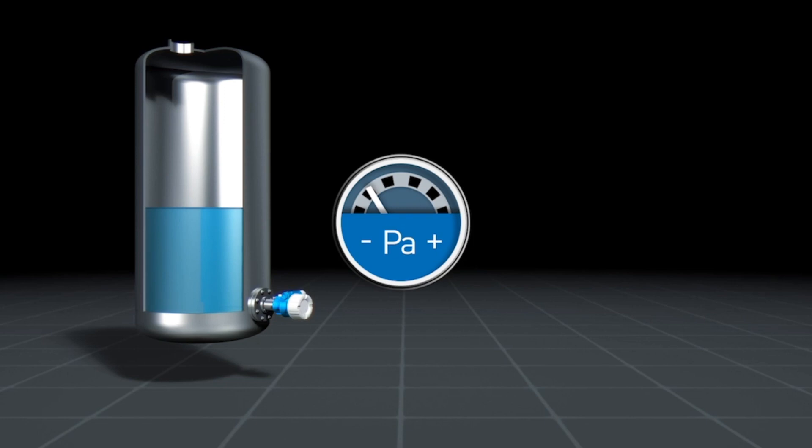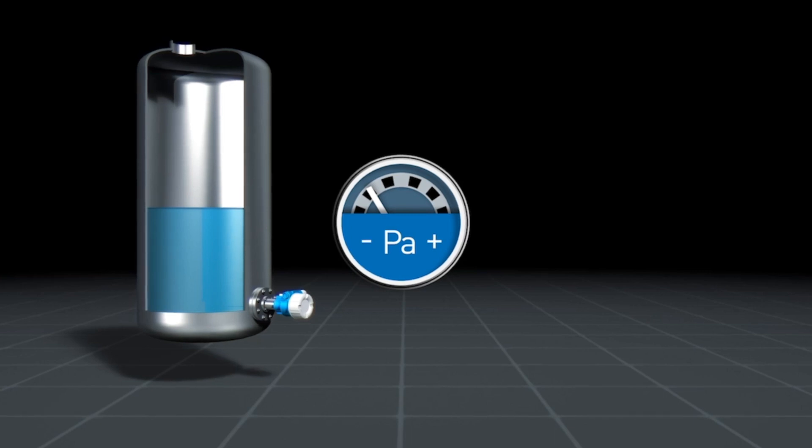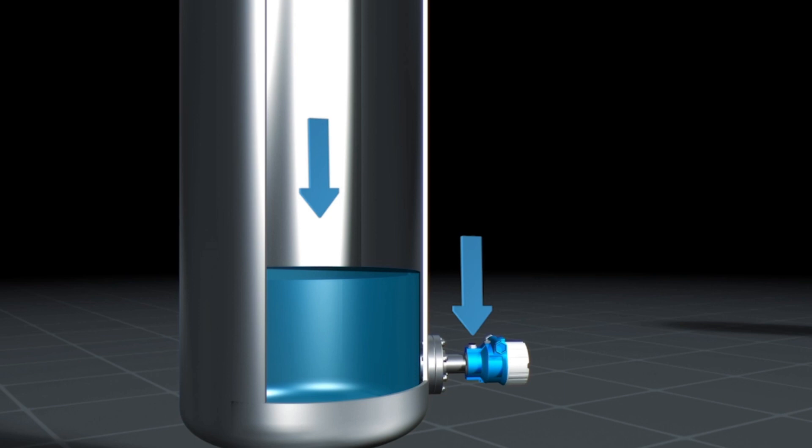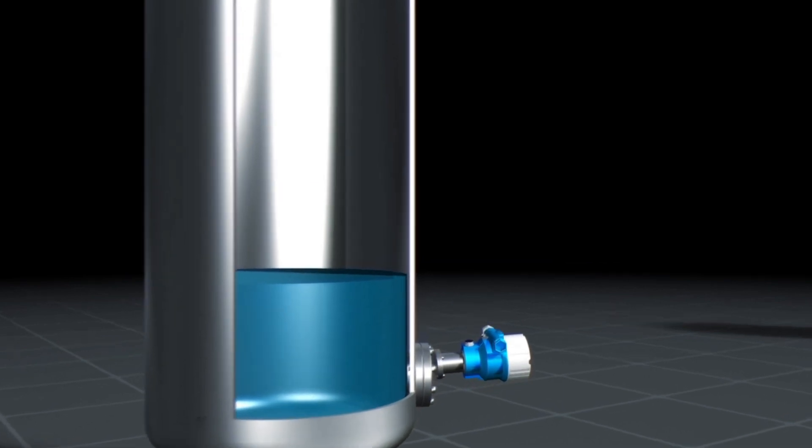In an open tank, pressure is continually compensated in relation to ambient air. Therefore, the gas in the upper area of the tank does not affect level measurement. However, in addition to the pressure of the liquid column, the atmospheric pressure also acts on the sensor. In atmospheric pressure compensation, the sensor is called a gauge pressure sensor. Let's have a closer look at such a sensor.